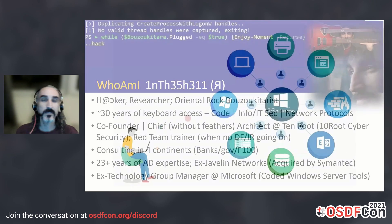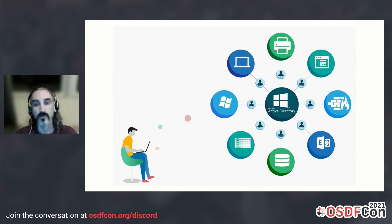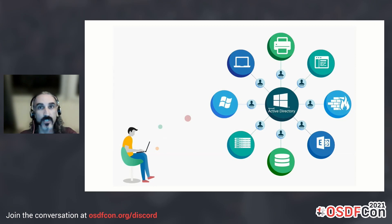Active Directory essentially is a database — a distributed database with multi-master replication. It is the source for users, computers, passwords, access control, et cetera. We used to talk about how attackers got in and what they took out, but not as much about how they moved laterally, how they performed reconnaissance for assets and entities, how they achieved persistence, and escalated privileges through the network and through the domain services.